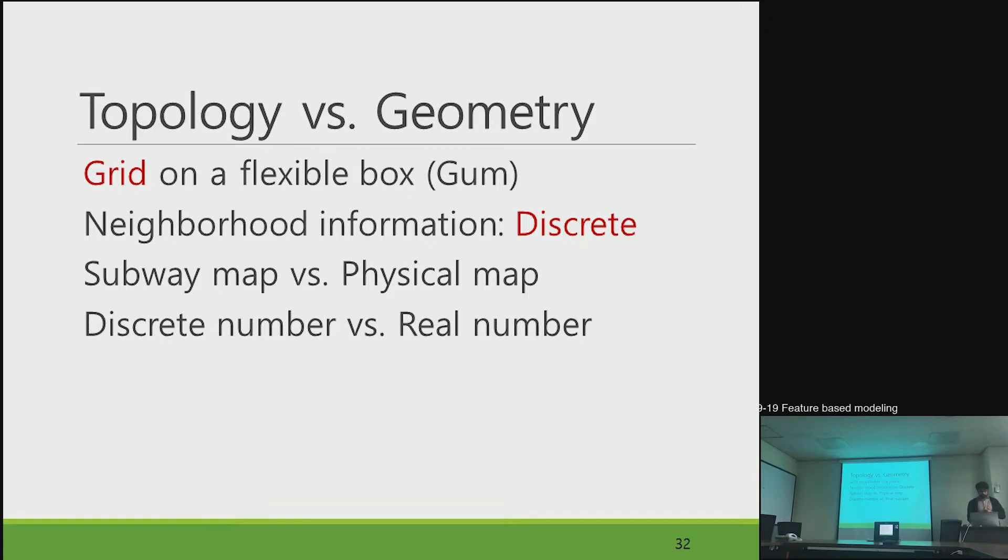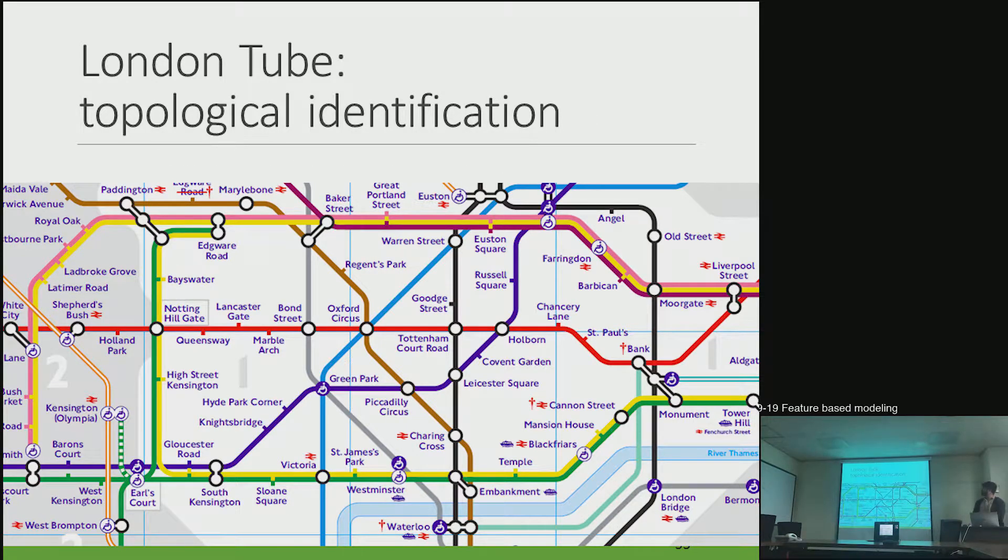Here is a topological map. Here we cannot see any kind of distance information or coordinates. But we can have roughly idea of the neighboring information so we can see that it is a topological map.